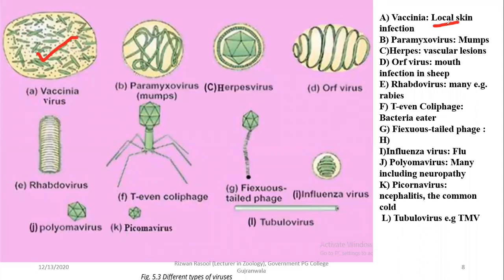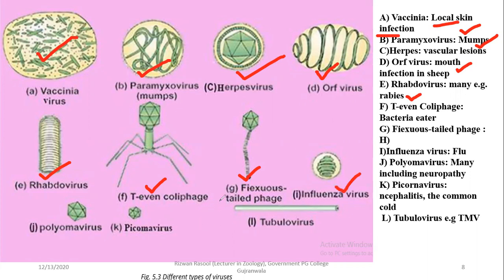First is the vaccinia virus, which causes infection. Paramyxovirus causes mumps. Vesicular lesions are studied in the pox virus. This is a mouth infection especially in sheep. This is a rhabdovirus, which causes rabies among other diseases. There are also coliphages and bacterial phages which are bacteria eaters. Influenza virus causes flu. Polyoma viruses cause many diseases including neuropathy. Picorna virus causes encephalitis and the common cold. The tobacco mosaic virus has a tubular shape and causes tobacco mosaic disease.